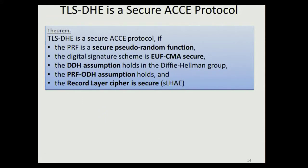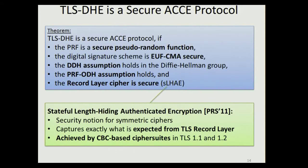ACCE considers the combination of the TLS handshake with the record layer. It requires that encryptions are indistinguishable — providing confidentiality — and that ciphertexts are authentic — providing authenticity of the channel. We can show that TLS-DHE is a secure ACCE protocol under all the assumptions from the truncated TLS case, plus one additional assumption on the record layer: the record layer cipher must be secure in the sense of stateful length-hiding authenticated encryption, a notion introduced at AsiaCrypt by Paterson, Ristenpart, and Shrimpton. It was also shown in that paper that this notion is achieved by CBC-based cipher suites in TLS 1.1 and 1.2.